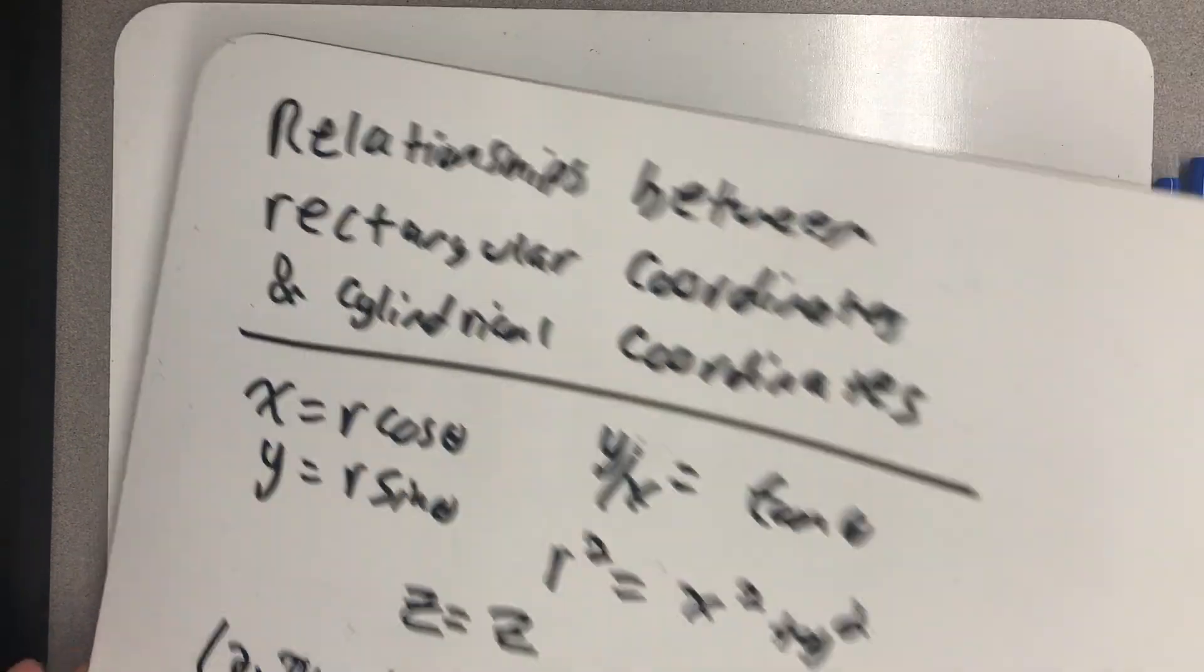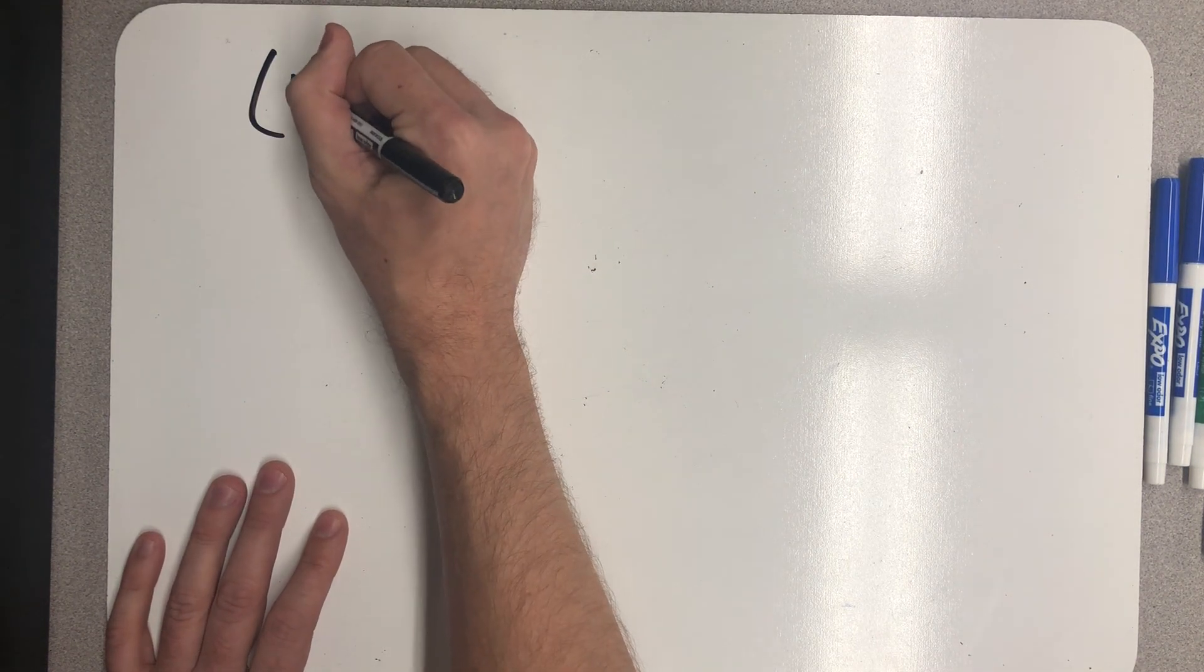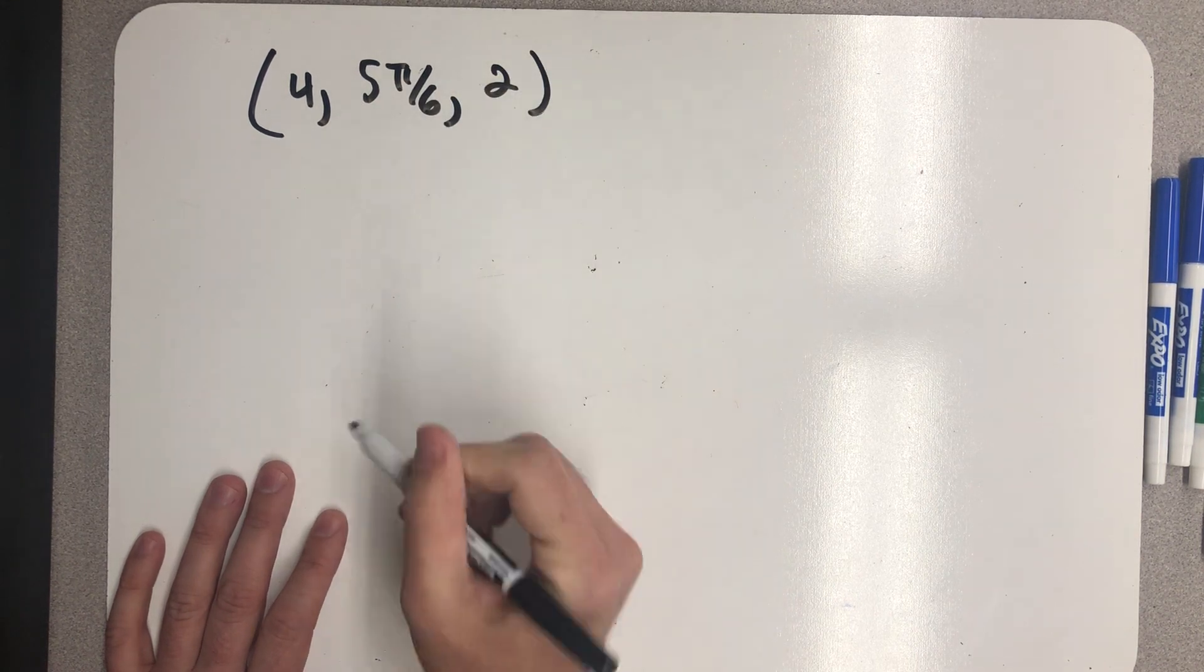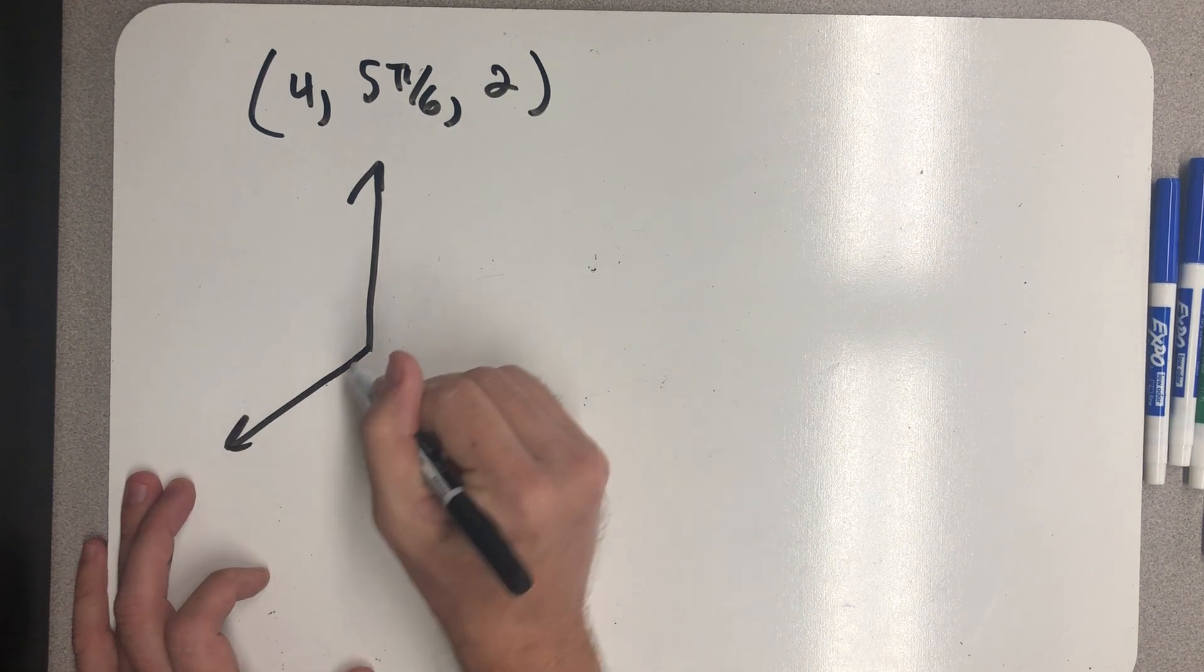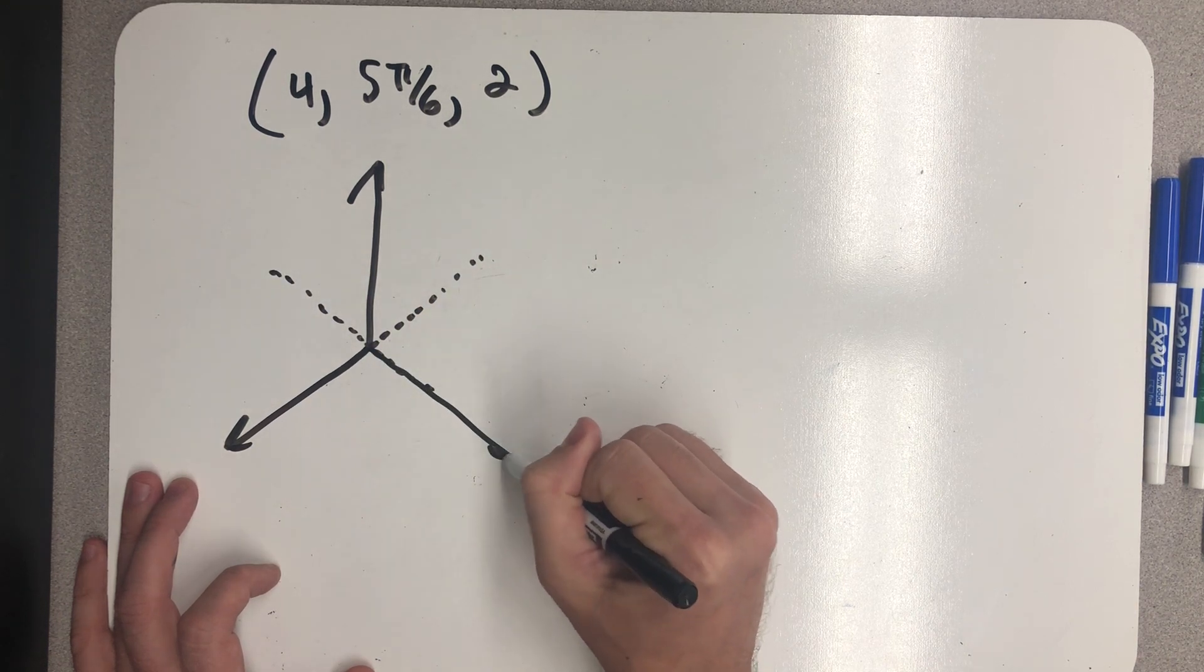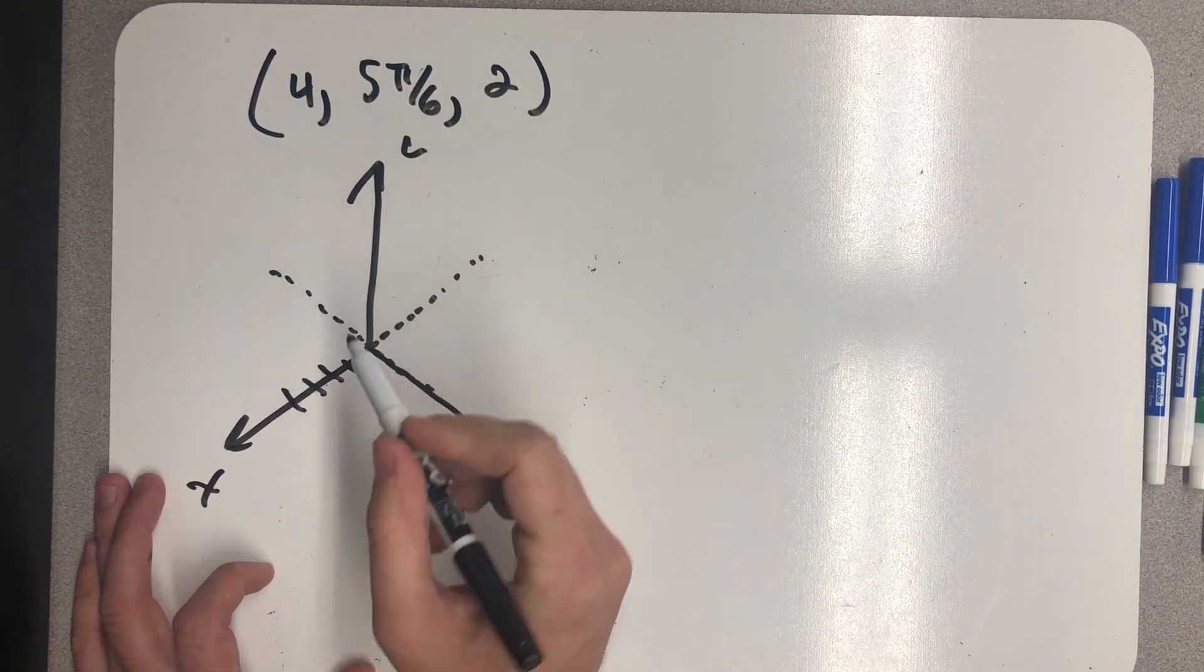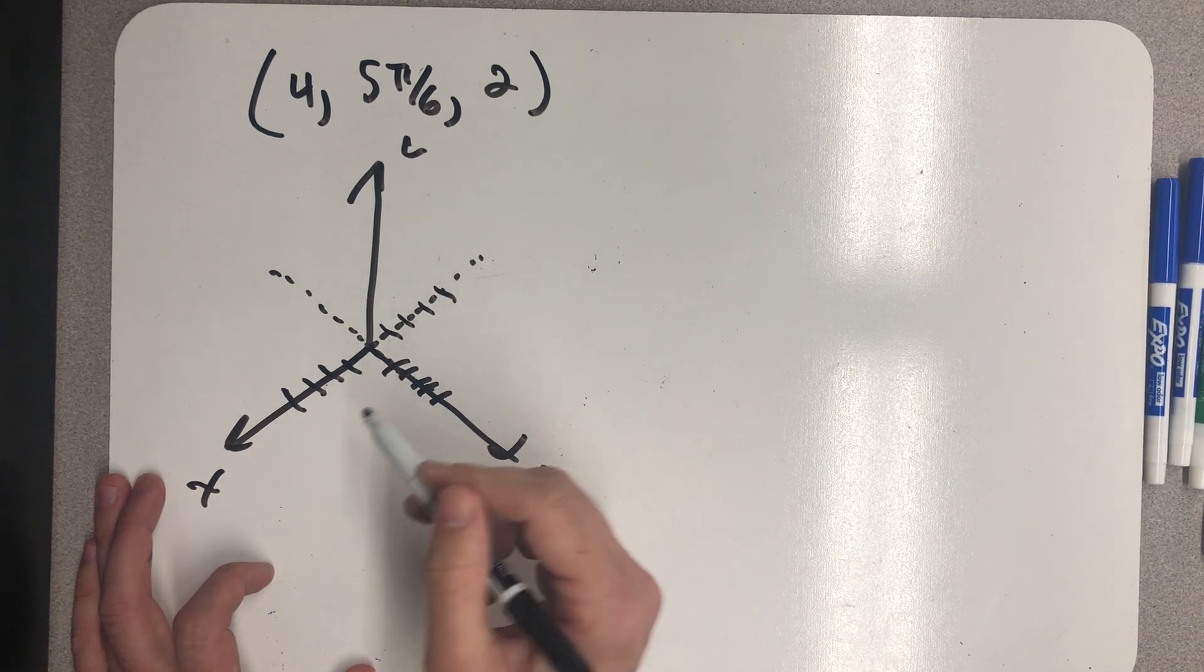Well, let's just plot one more point in a cylindrical world. And the example I want to do here was the point 4, 5 pi 6, 2. You don't have to do it exactly the way I'm going to, but I tend to approach them all the same way, just to be as simple as possible. I know whatever point I'm getting ready to plot lies on a circle of radius 4 in the x-y plane.